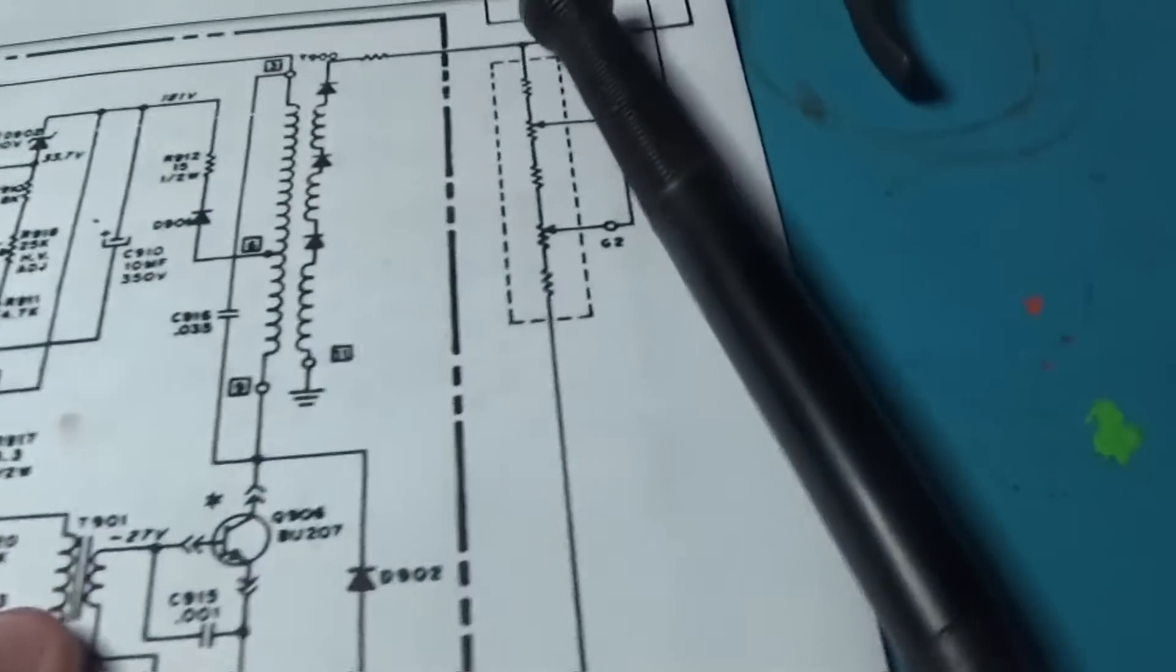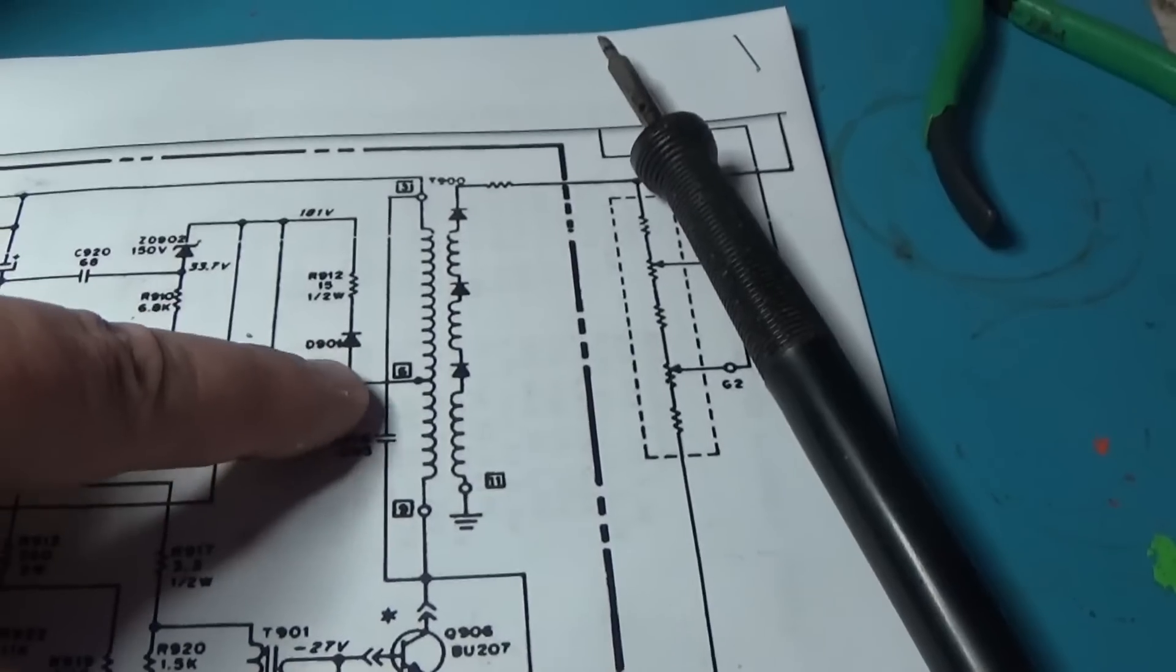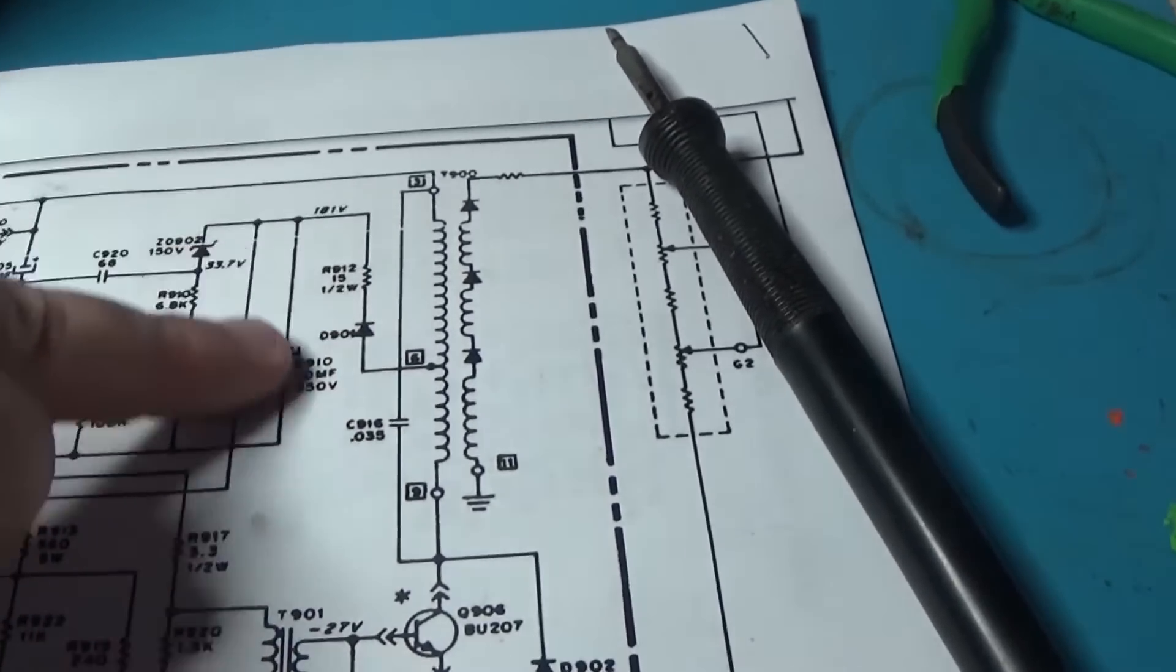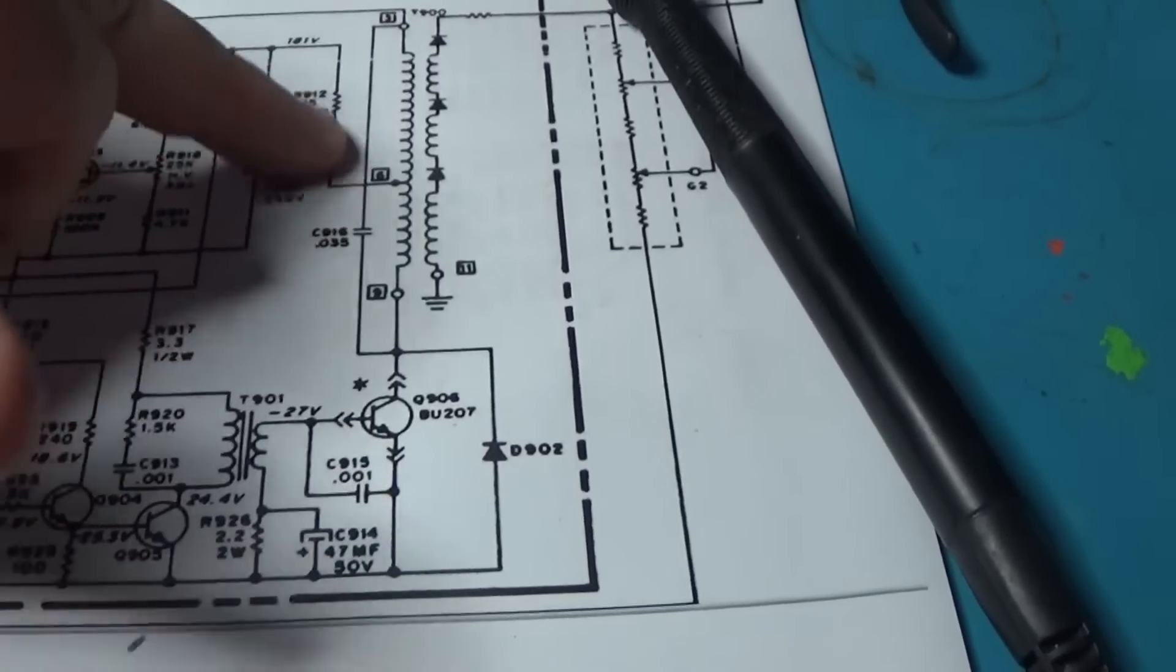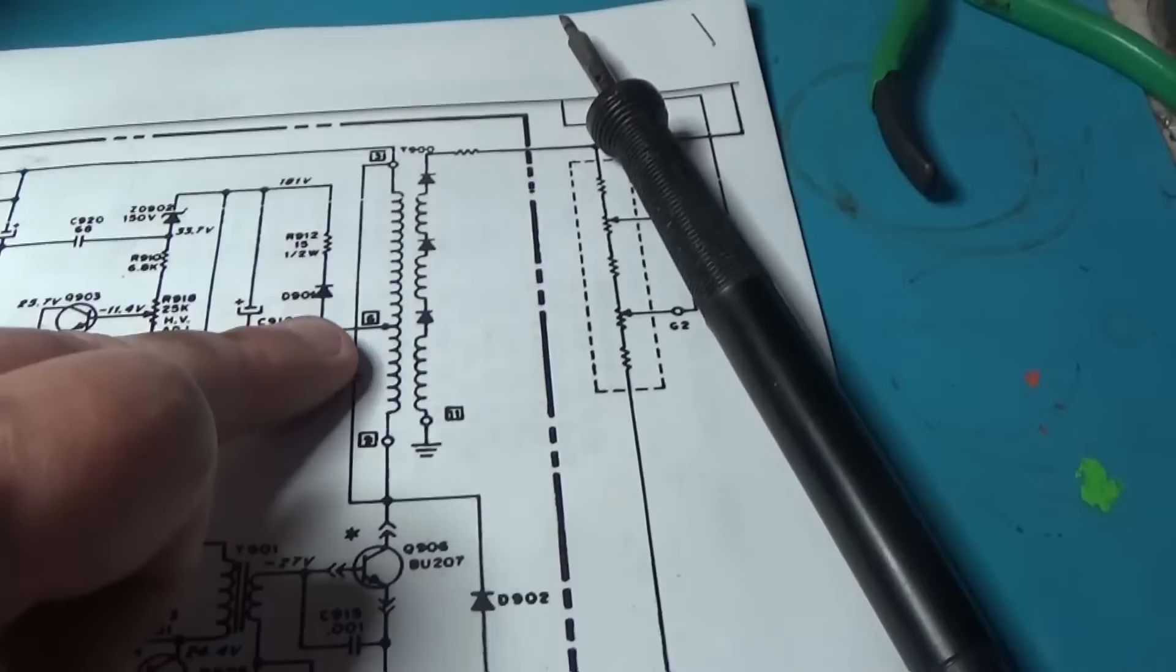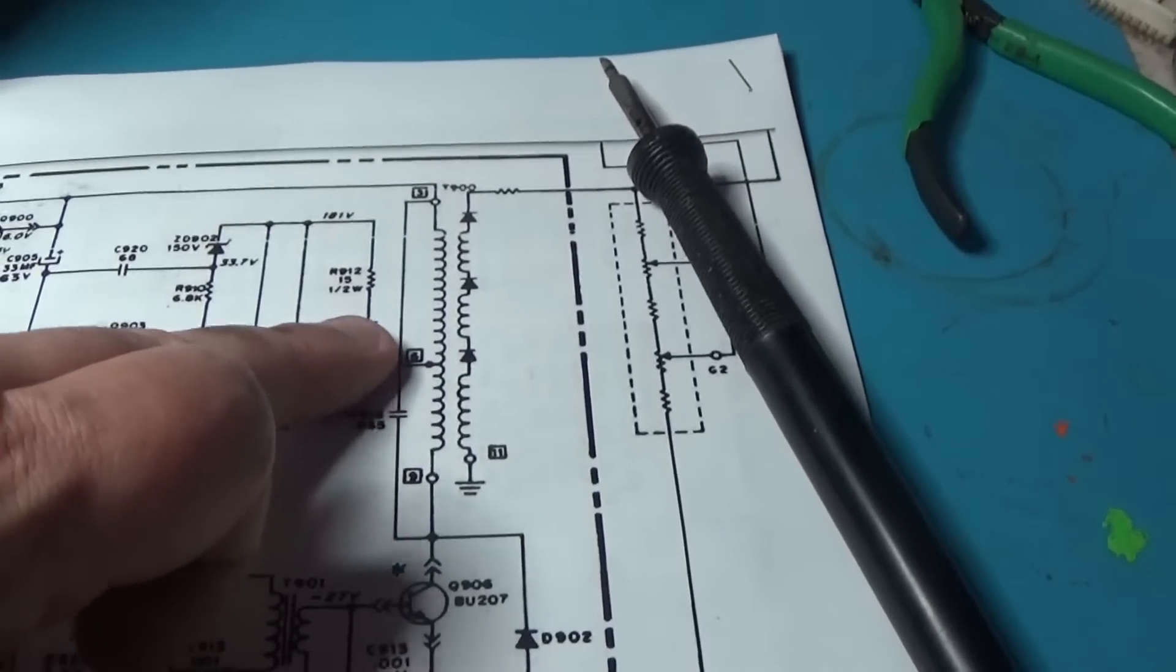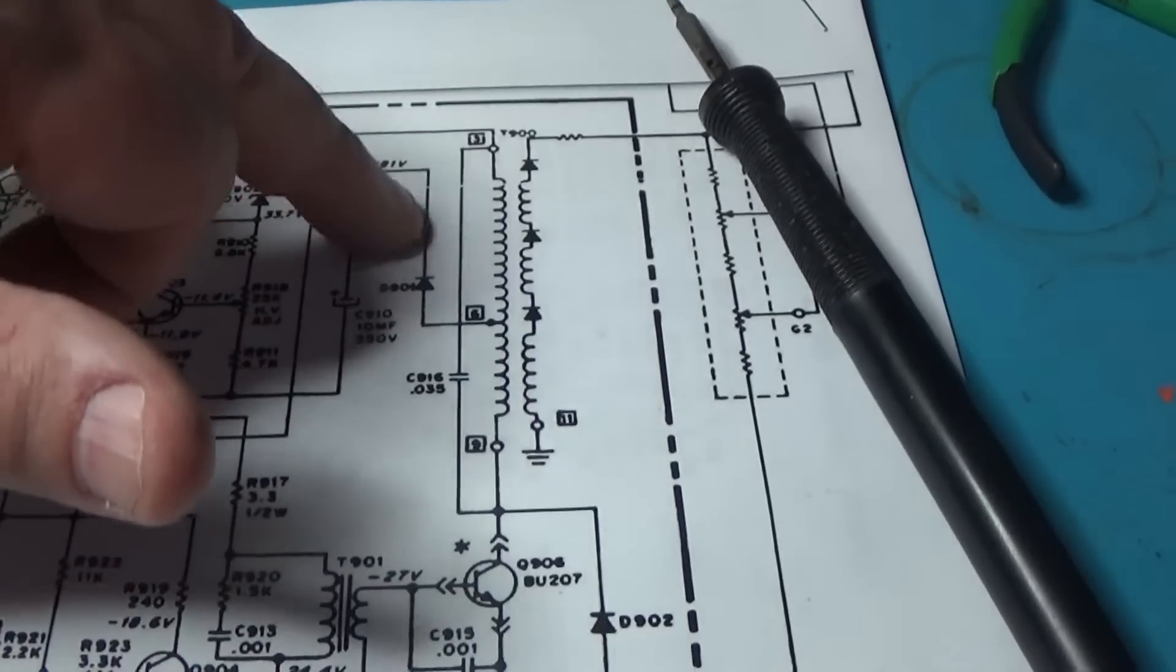What D901 is doing is blocking current going back through this circuit from down here. It's just blocking that and allowing current through here. Well if it's shorted, there's an over-current situation apparently and it fried that resistor.